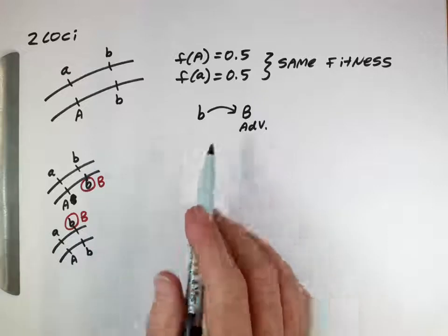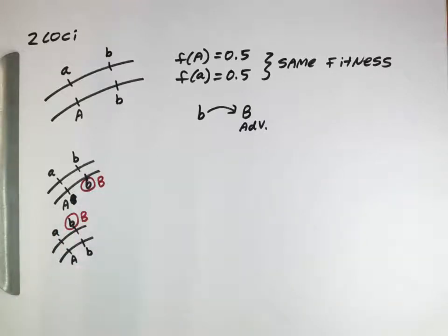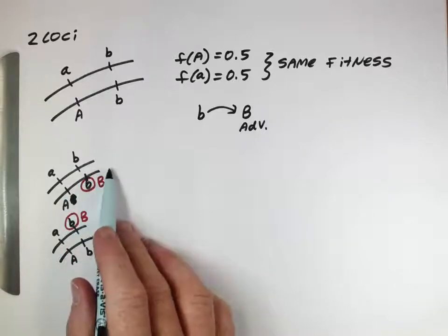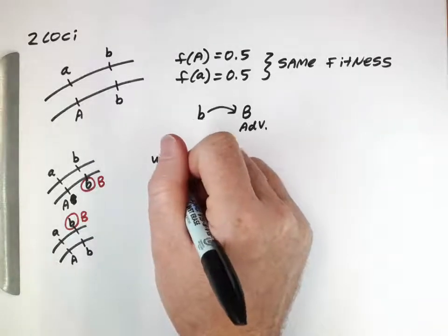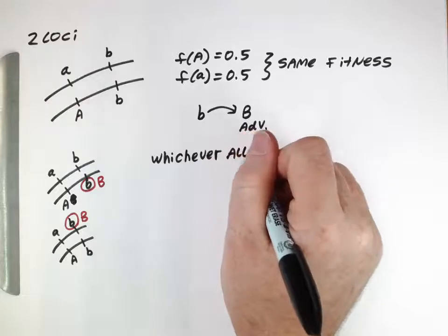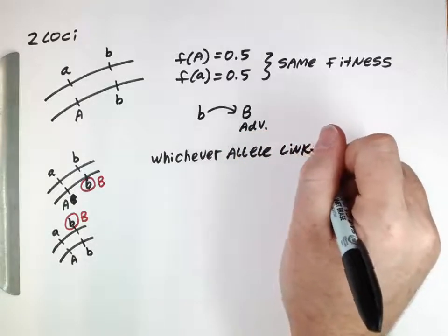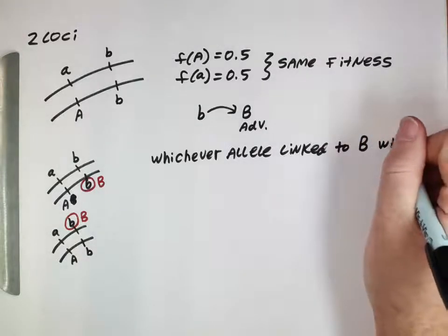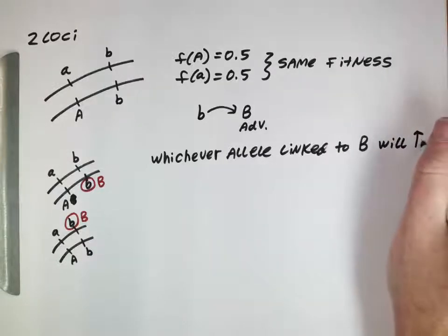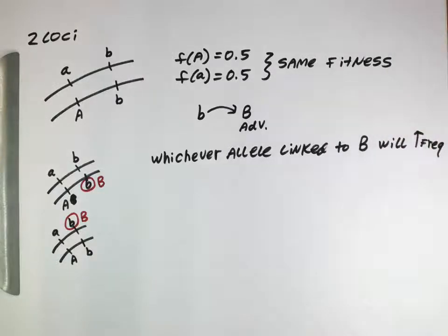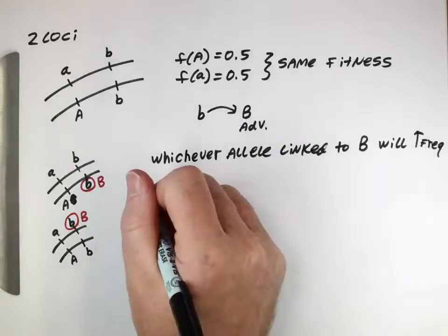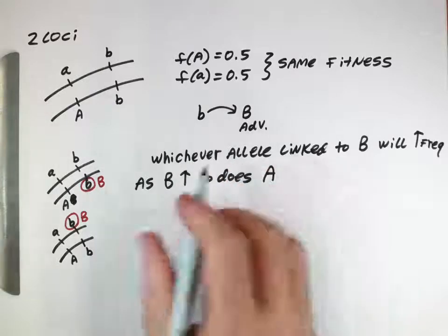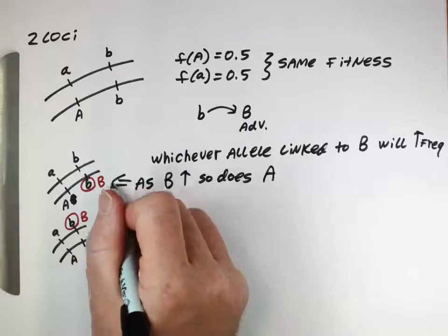And if it's advantageous, that chromosome is going to be under selection. The selection increase in the frequency of this allele is going to act to kind of increase the frequency of this chromosome as well. So whichever allele is linked to the capital B new advantageous mutation will increase in frequency as the capital B allele. So as B increases in frequency, so does A in this example here.